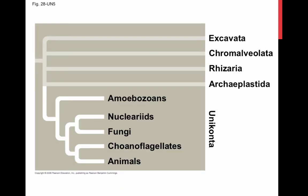Unikonts include protists that are closely related to fungi and animals. This supergroup, Unikonta, includes animals, fungi, and some protists. This group includes two clades: the amoebozoans and the opisthokonts, which are animals, fungi, and related protists.